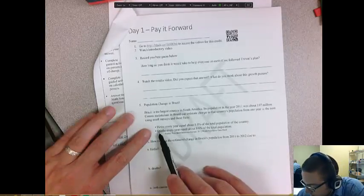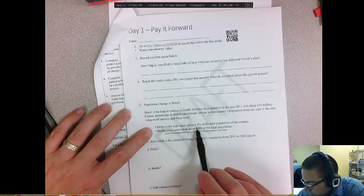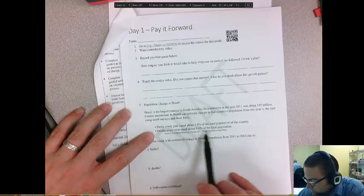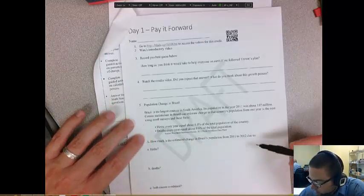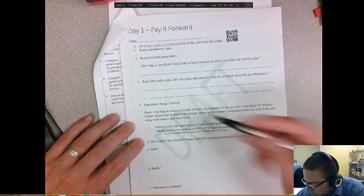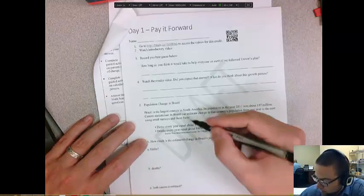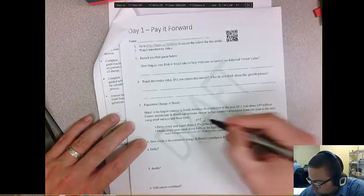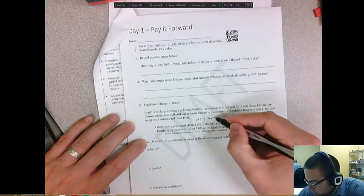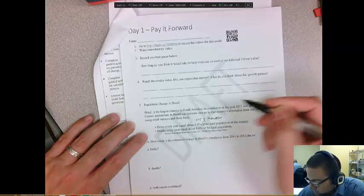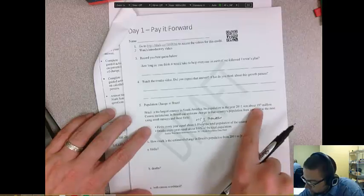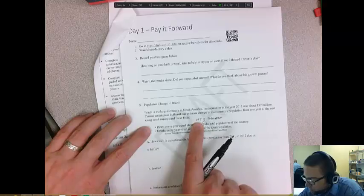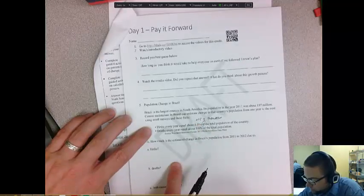So Brazil, it says, the births every year equal about 1.5% of the total population in the country, and deaths every year equal 0.6% of the total population. So this word of, I always think of it as it's multiplying. So this is 0.015 as a decimal times the population. So that's the number of births that are going to happen. So it says 197 million, so you'd multiply 197 million times 0.015 to find how many births there were in one year.